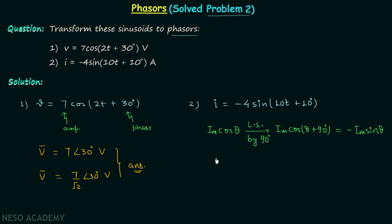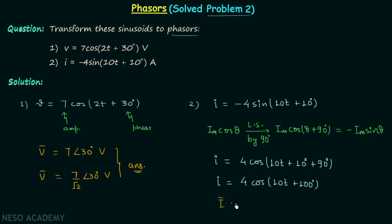So we can say that current i is equal to 4cos(10t + 100°). The phasor representation will be 4∠100° in amperes, corresponding to the peak value of current i. The phasor representation corresponding to the RMS value will be equal to (4/√2)∠100° in amperes. So this is the answer of the second part.